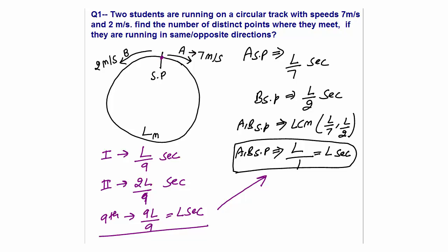The ninth meeting will take place at the starting point when they are running in opposite direction. It means that before meeting at the starting point they will have met eight times, and the ninth meeting will be at the starting point. So at a total of nine distinct points they will meet on this track when running in opposite direction. The answer is nine.